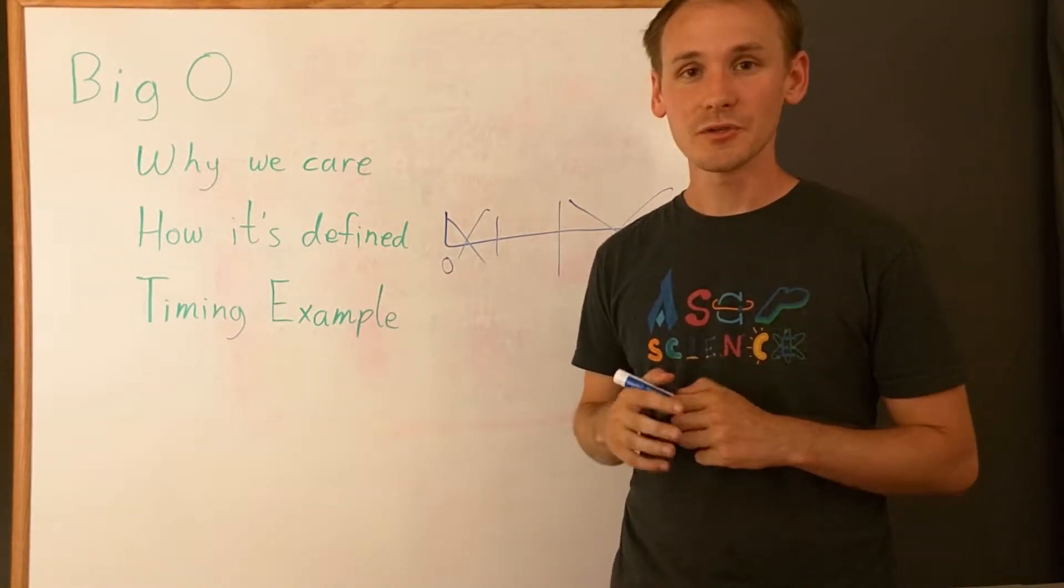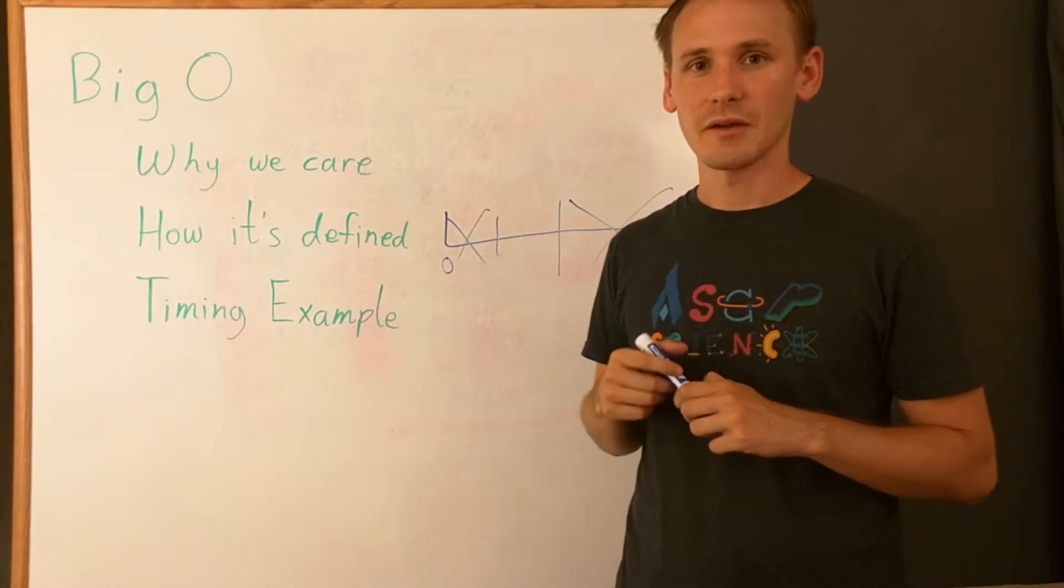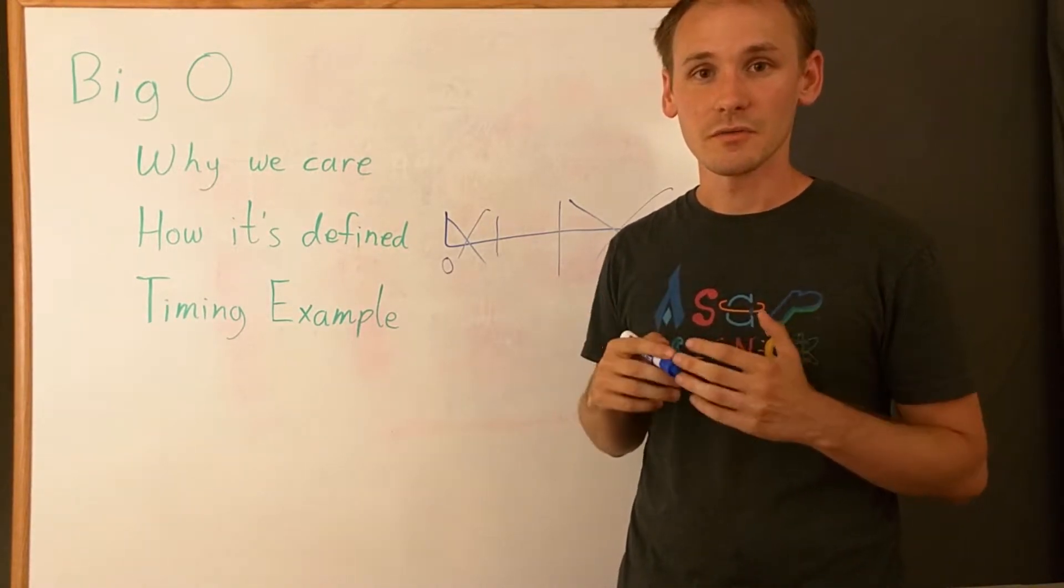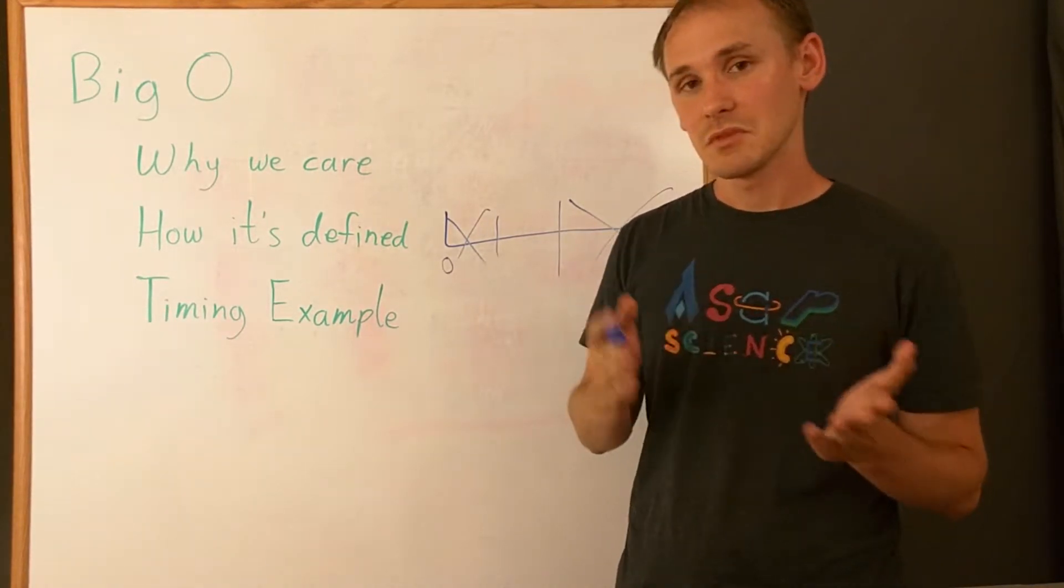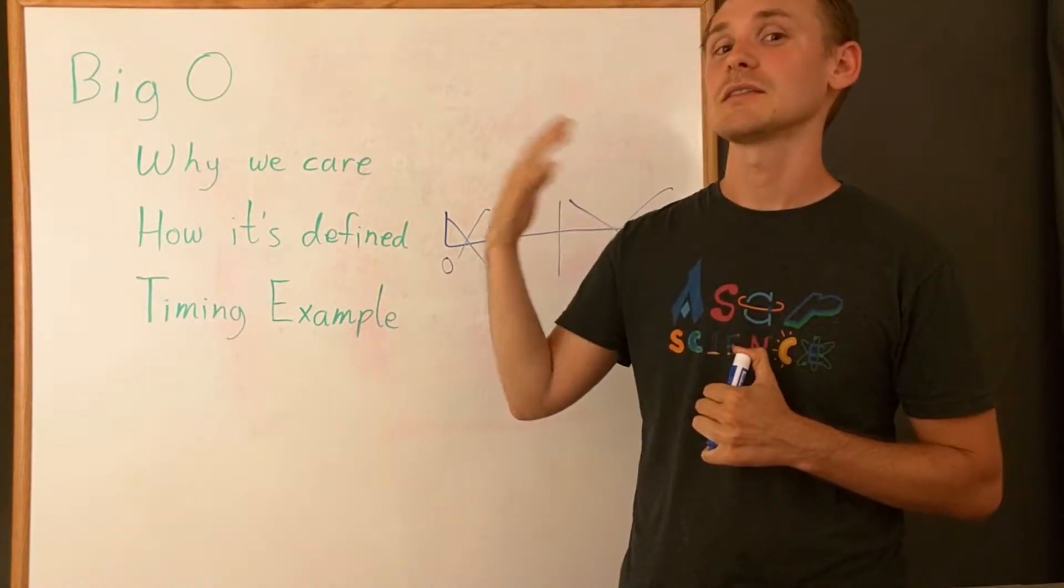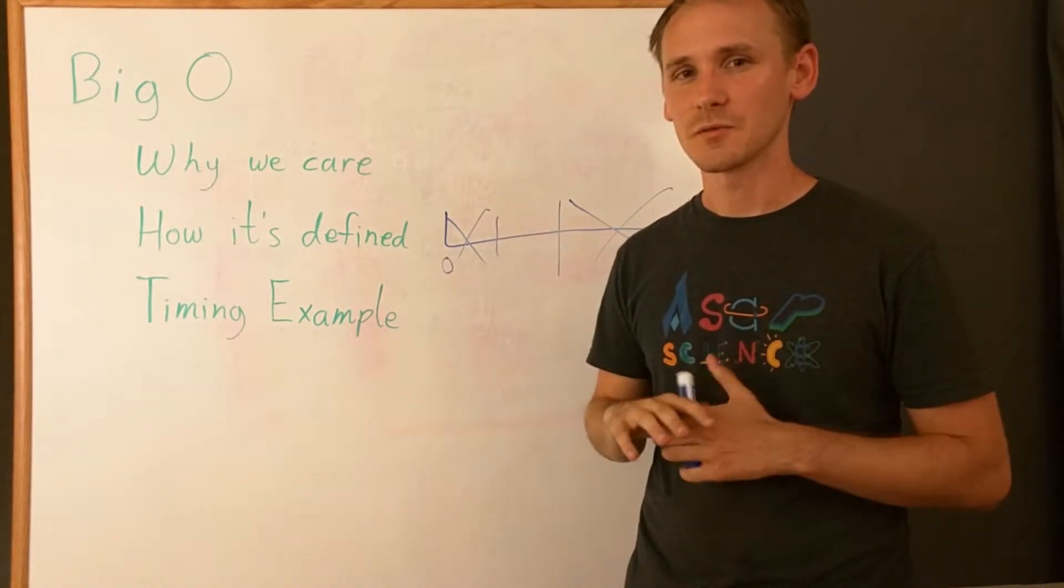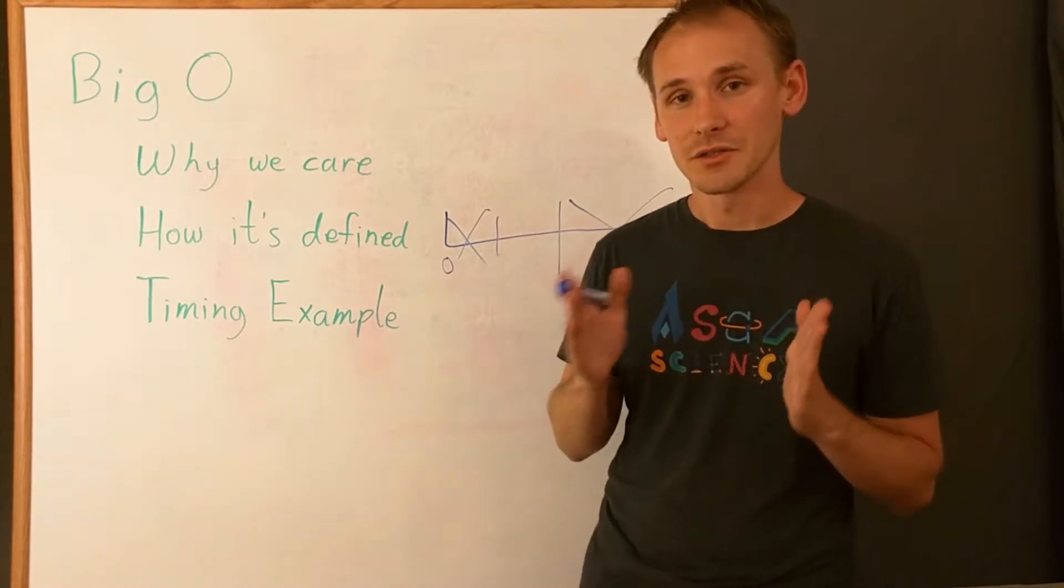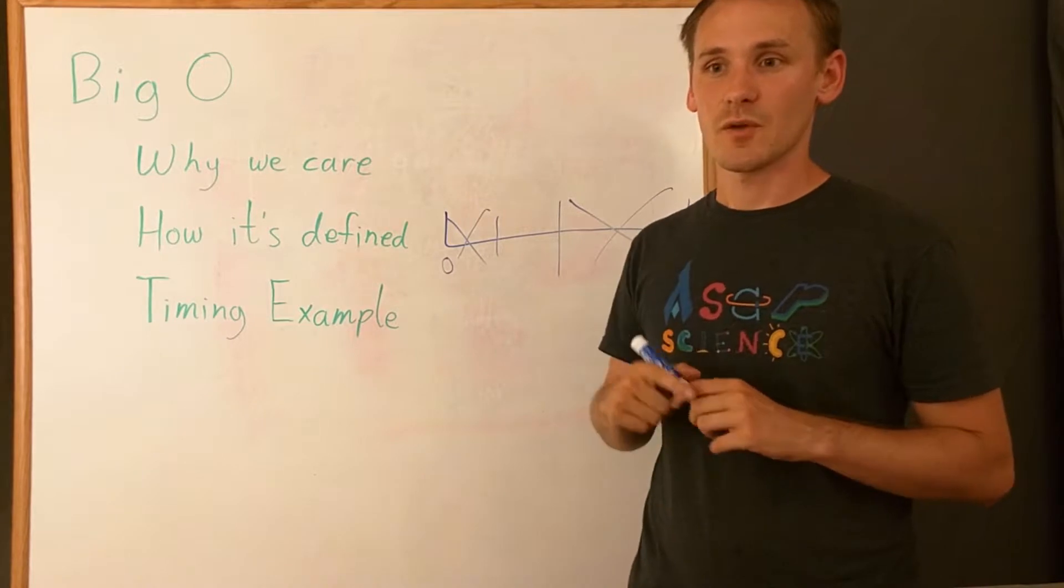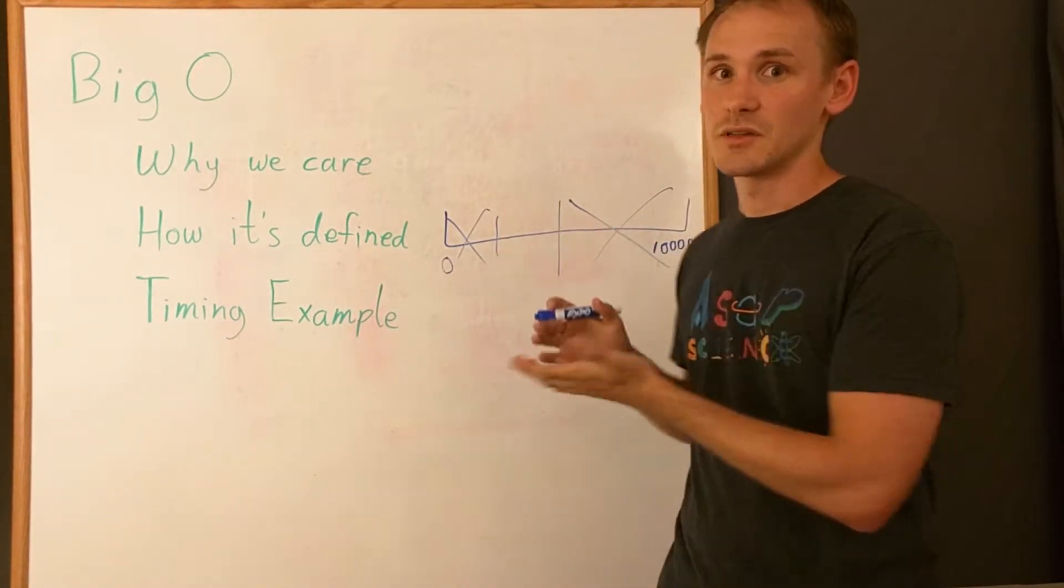As a simplification, though, we usually just say that the big O or the running time for binary search is on the order of log of n, because log base two of n is really just some constant times log of n. We don't really care about the constant. We don't really care about how long each step is. We mostly care about how many more steps there are to do as the size of the input grows.